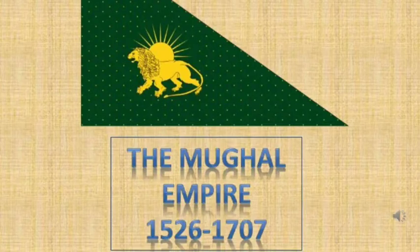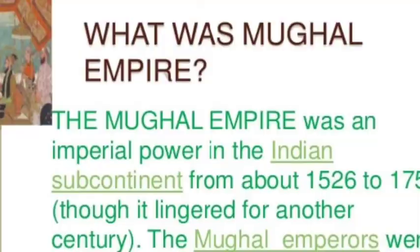Hello everyone. Today we are going to start a new chapter from history — the Mughal Empire. This Mughal Empire ranges from 1526 to 1707. It was extremely a difficult task to rule as large a territory in the subcontinent of India. But the Mughals imposed structures of administration and ideas of governance that outlasted their rule, leaving a political legacy in India.